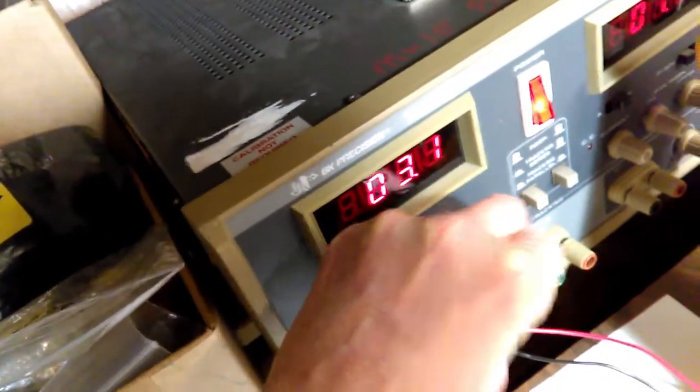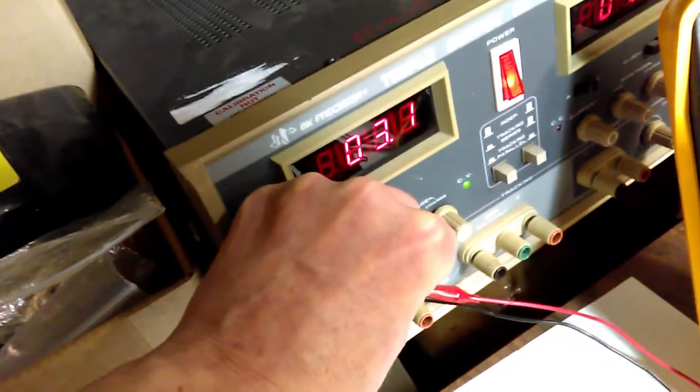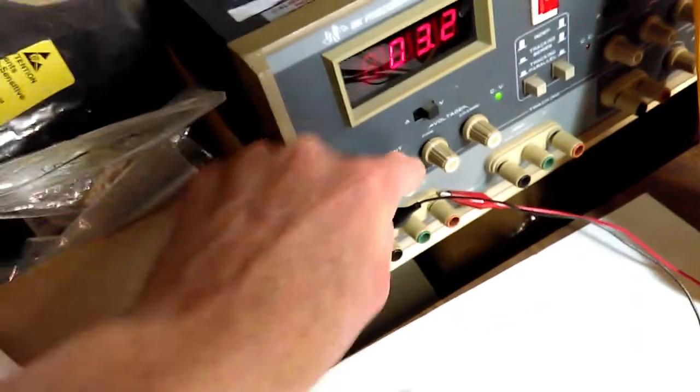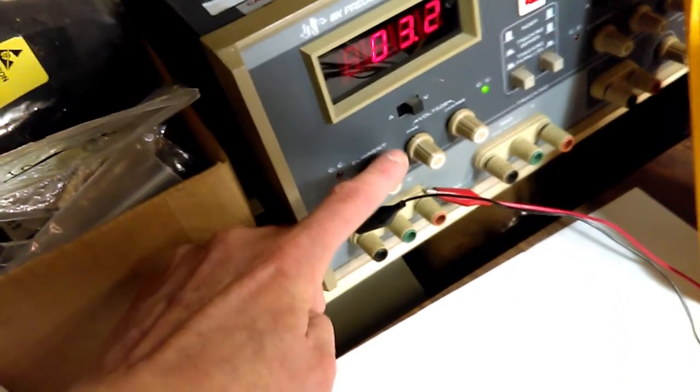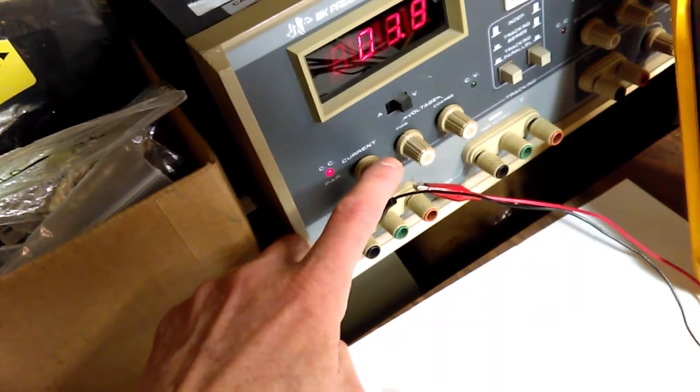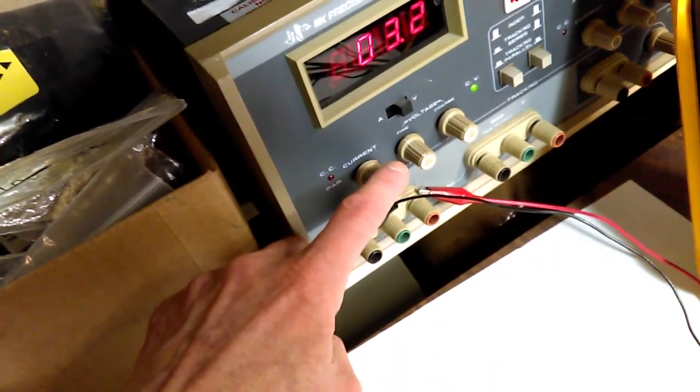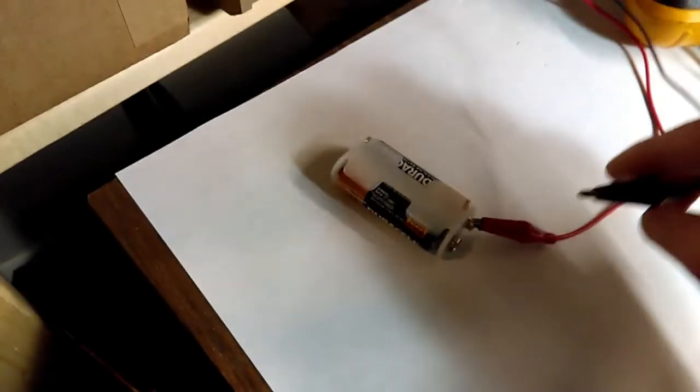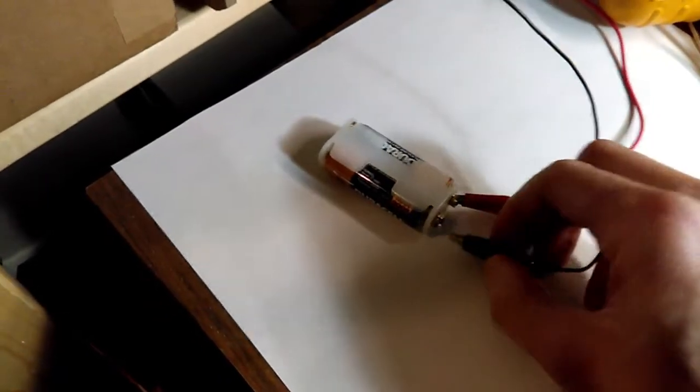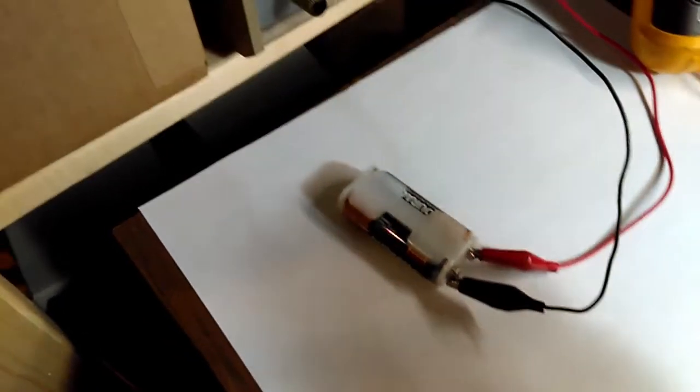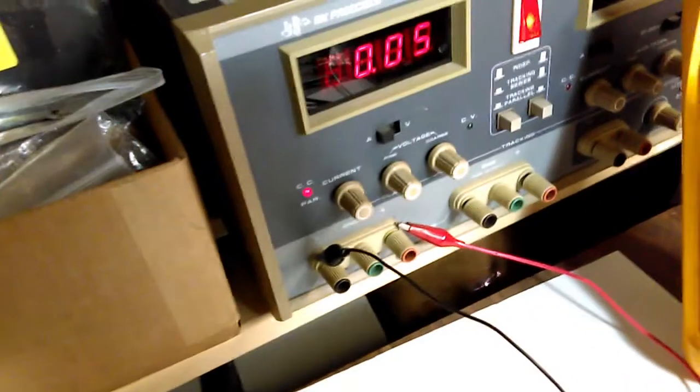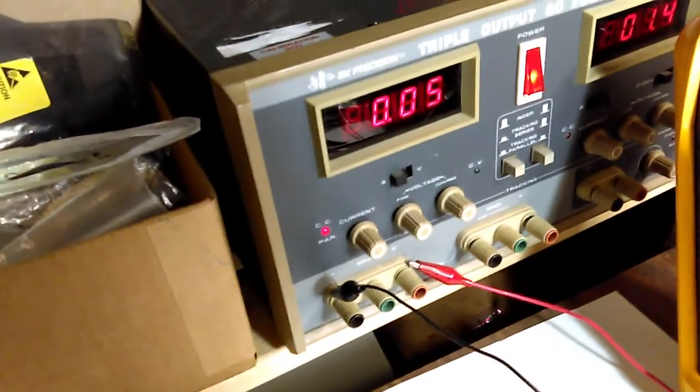All right, now I've got the current set so low that the power supply is not even... so right there it's barely at the lowest current setting. So now I'm just going to switch and then I'm going to connect it up and switch my power supply so it's metering on the current.